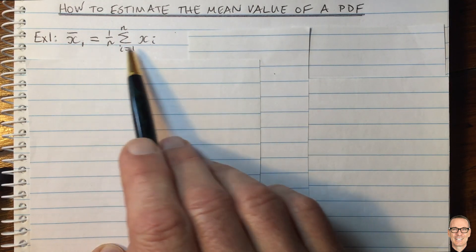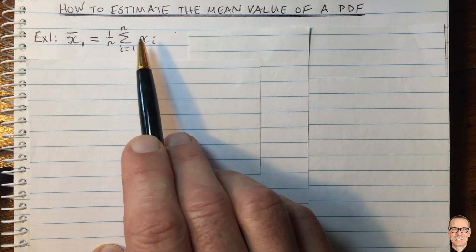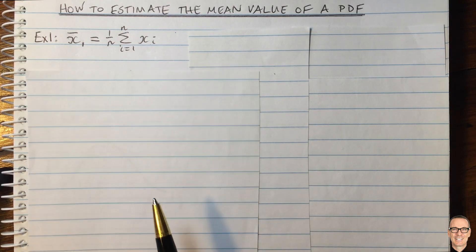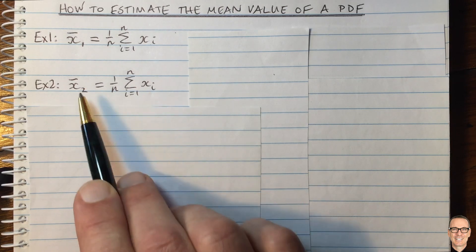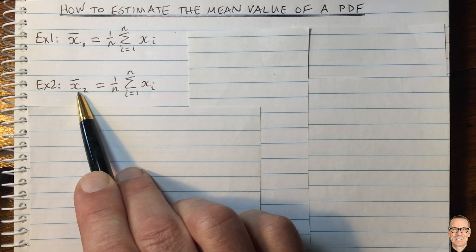But of course, we see straight away that that estimate depends on the samples that we took. So if we did another experiment, experiment 2, where we pick different samples, then we'd get a different estimate for the mean.